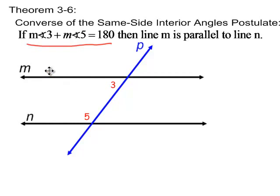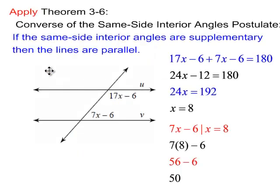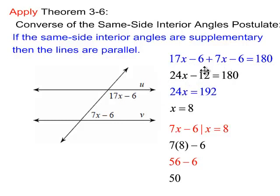We'll throw some expressions in there and do the math. In order for line u to be parallel to v, these two expressions have to add up to 180 degrees. So add the two expressions together and set it equal to 180. Combine like terms, then add 12 to both sides, then divide by 24 — you get x equals 8.